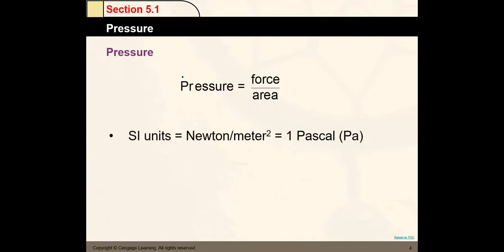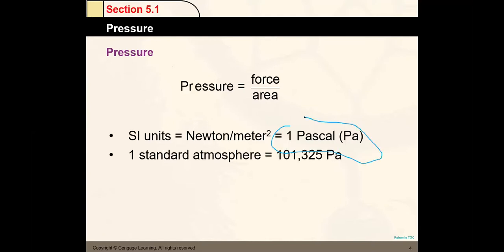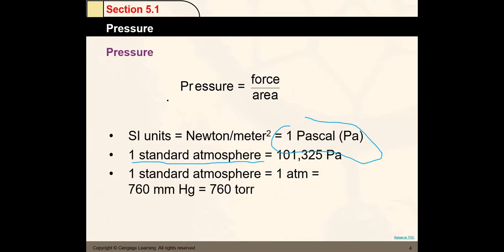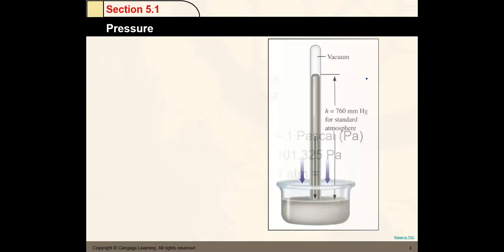The SI unit is the Pascal. But normally in chemistry we use atmospheres of pressure. The conversion factor is 1 atm = 101,325 Pascals. Another unit is millimeters of mercury — 1 atm = 760 mmHg, which is also equal to 760 Torr.